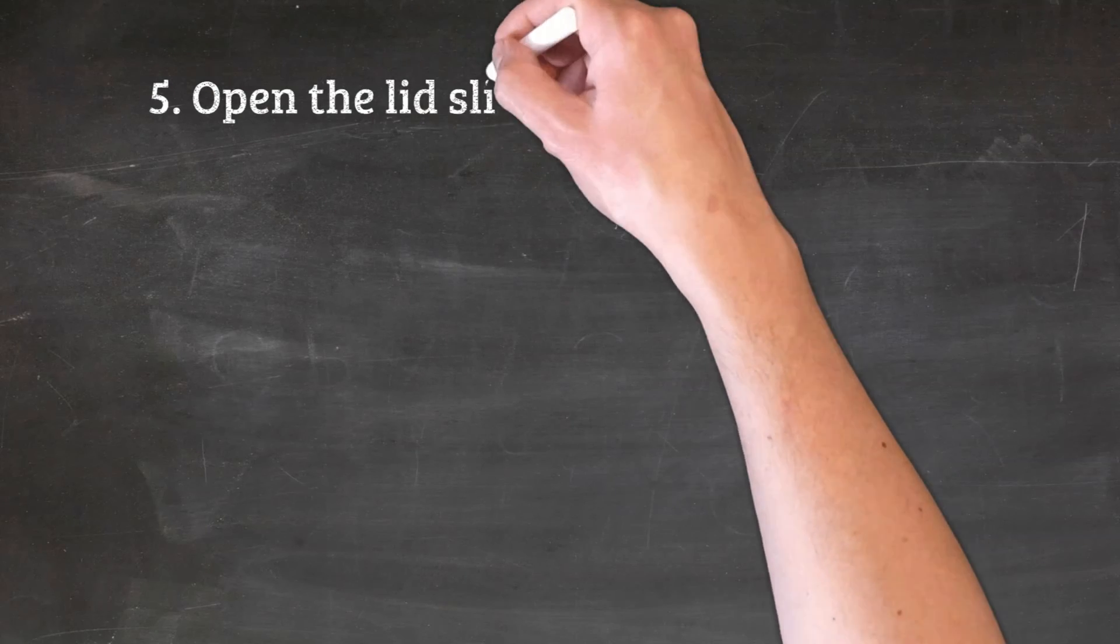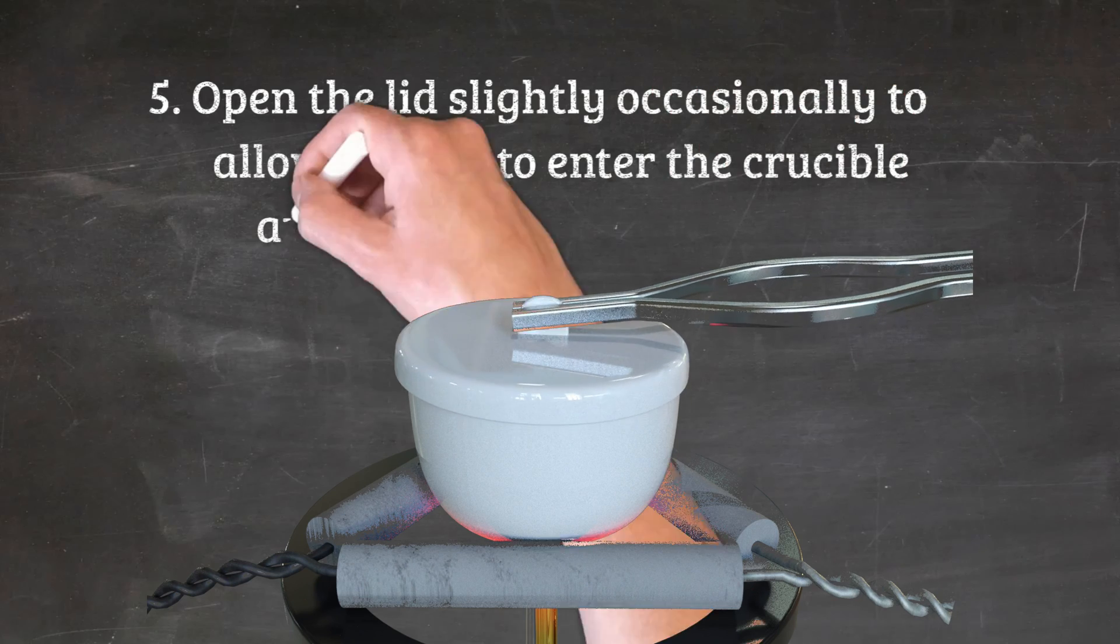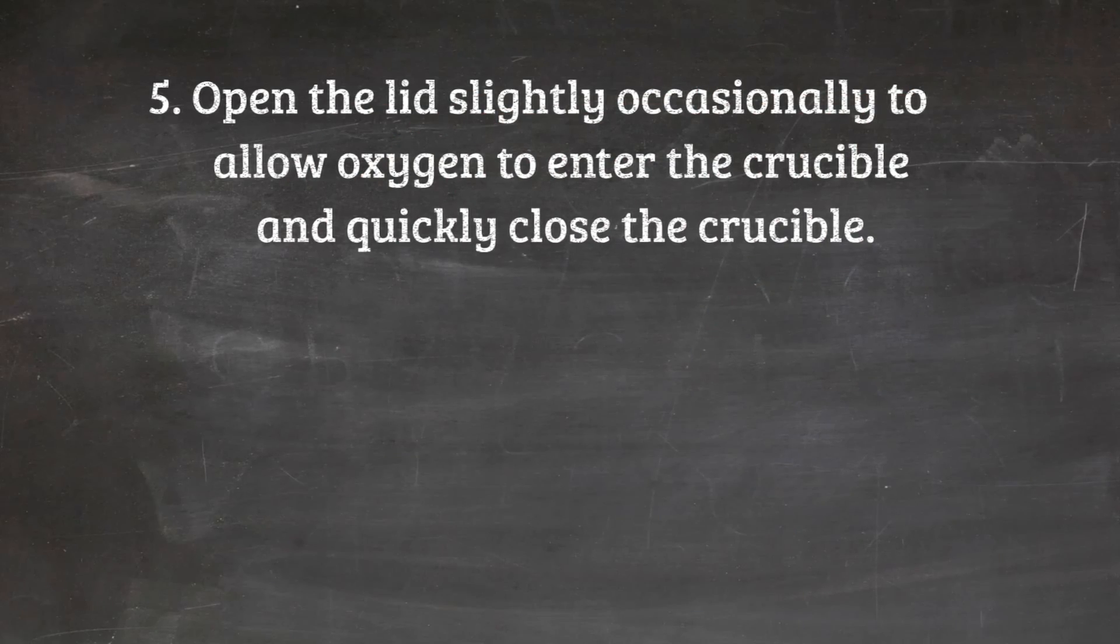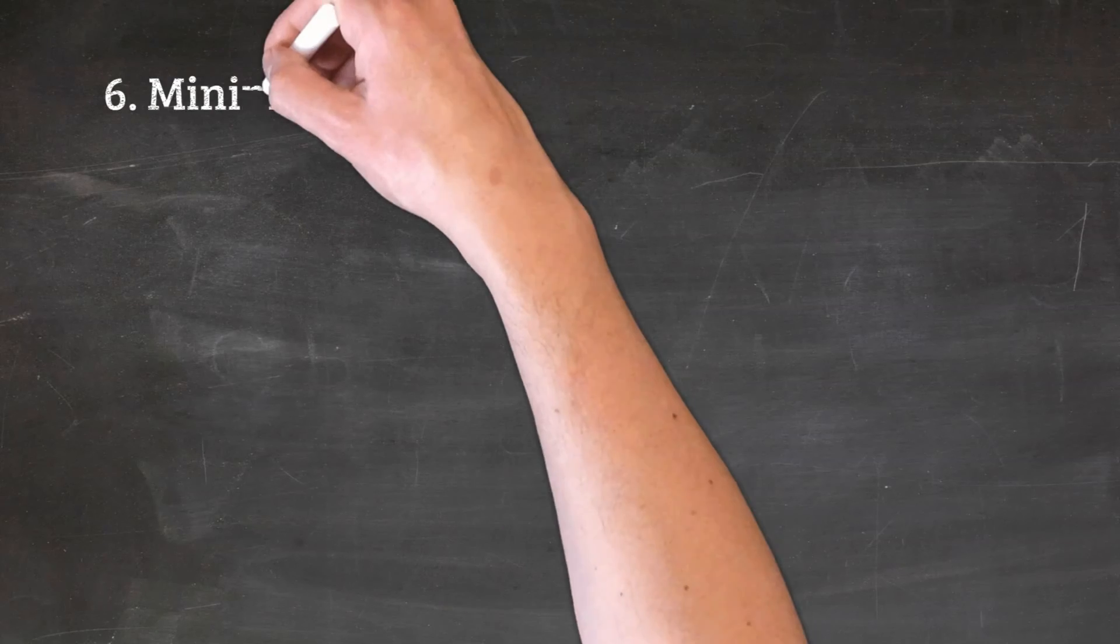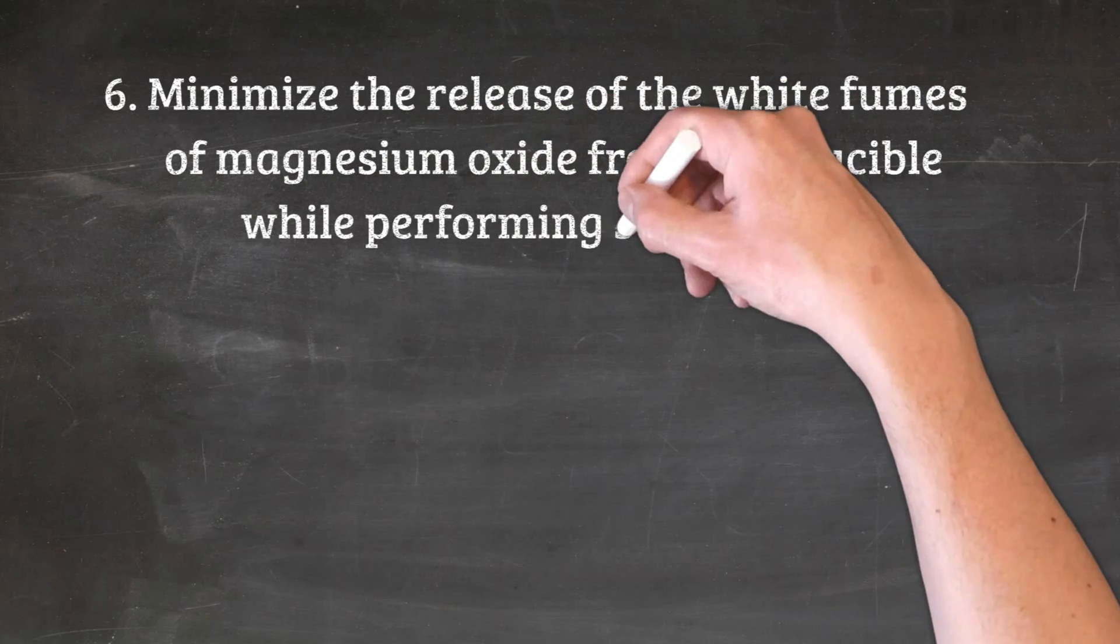5. Open the lid slightly, occasionally, to allow oxygen to enter the crucible and react with the magnesium, and then quickly close the crucible. 6. Minimize the release of the white fumes of magnesium oxide from the crucible while performing step 5 above.